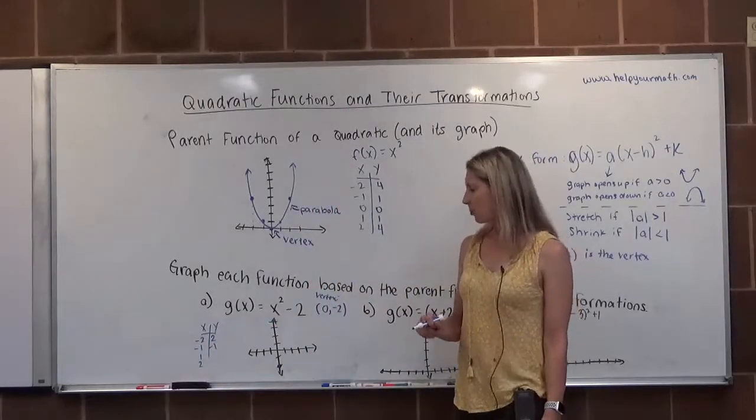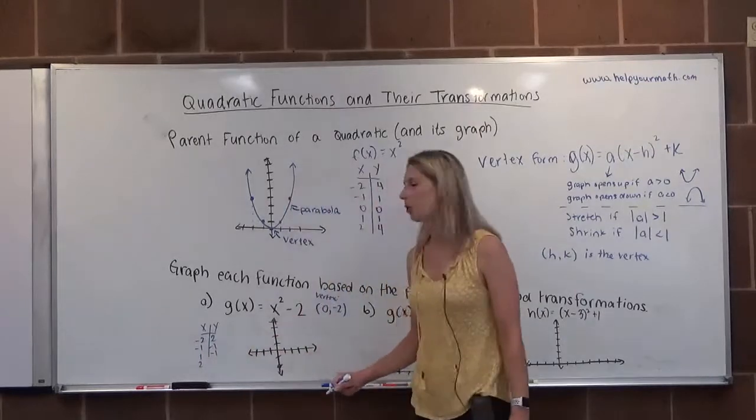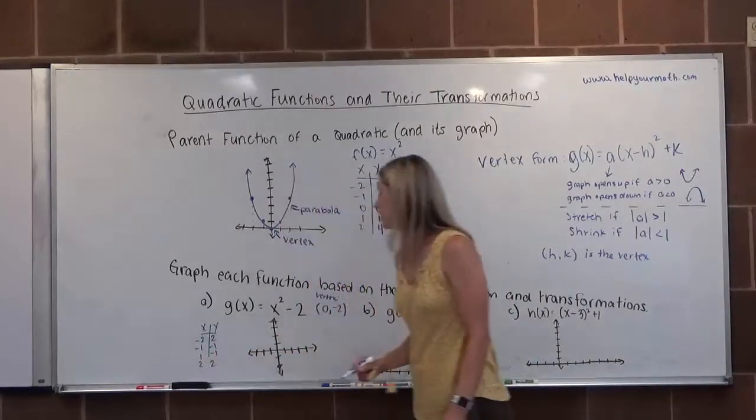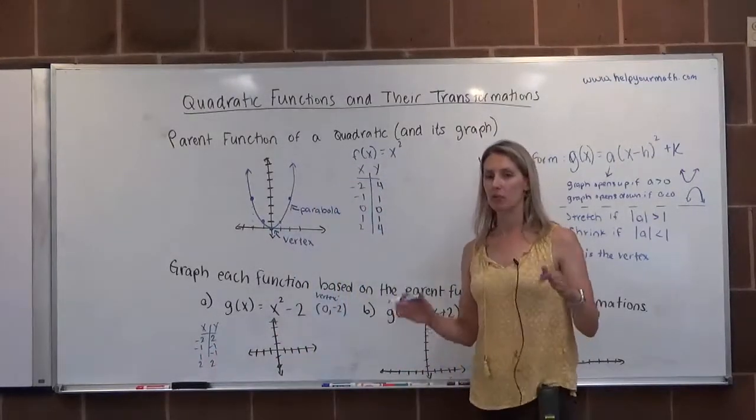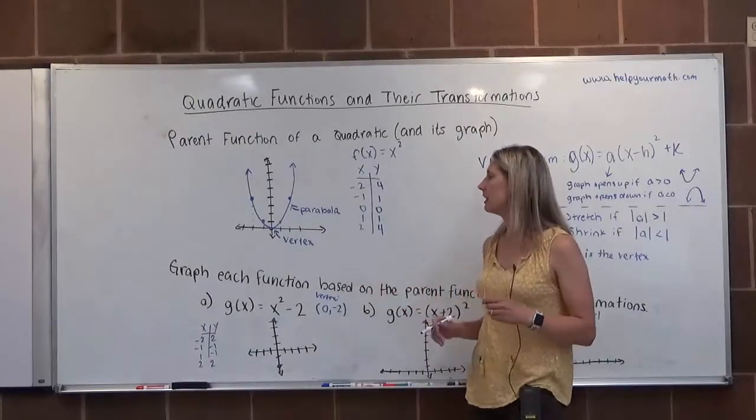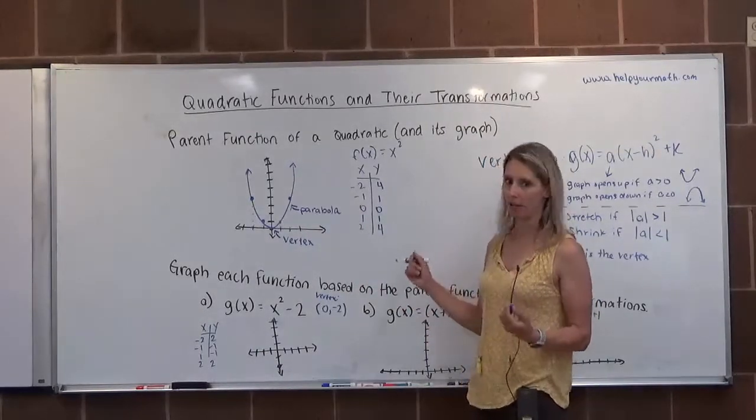1 squared is 1, minus 2 is negative 1. 2 squared is 4, minus 2 is 2. So then I can graph these. As I mentioned more abstractly, you don't necessarily need to do the table of values if you know the pattern for quadratics.